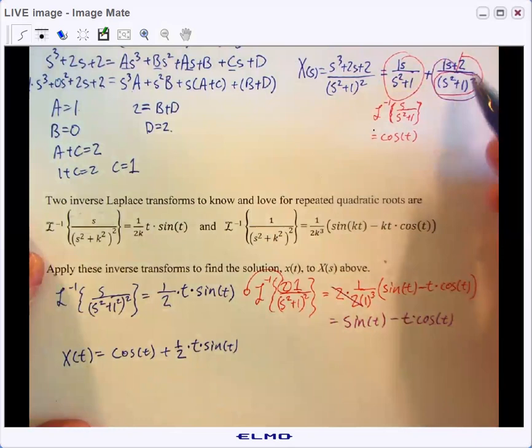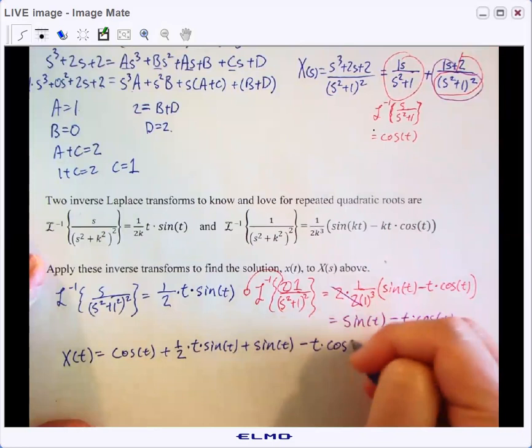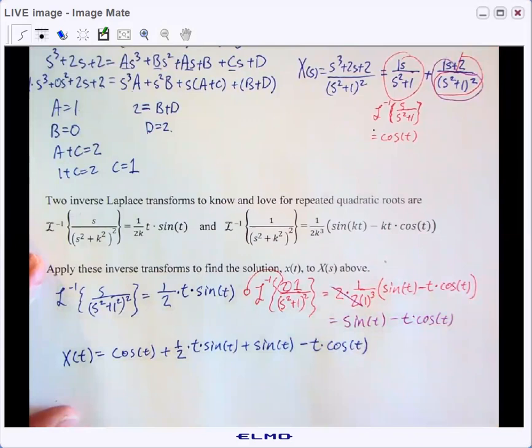coming from this piece, plus the last piece, the twos divided out, and we had plus sine of T minus T times cosine of T. So there would be our original solution if capital X of S in our Laplace workings was this guy right here. Okay, we'll let you stop there and work on the homeworks.